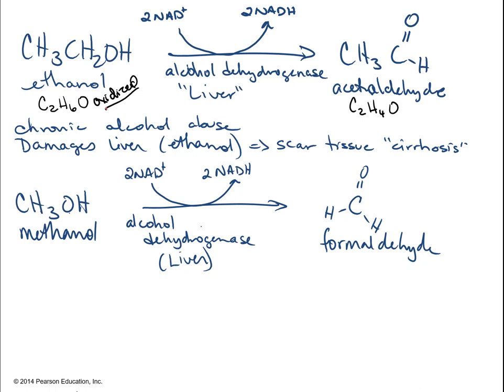Liver failure is a terrible way to die — you end up jaundiced, out of your head because of ammonia in your blood, essentially looking like an oompa-loompa. That's cirrhosis. You can't survive without a liver. One drink an hour, your liver is happy and fine. Ethanol is made from grain, corn, wheat, barley, or even grapes — some kind of sugar source.